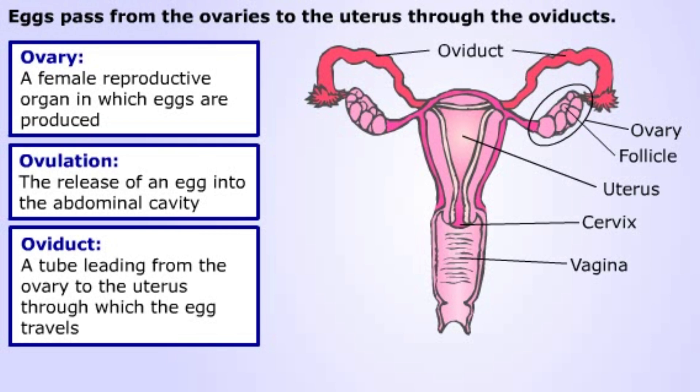In mammals, the egg implants into the wall of the uterus once it is fertilized, and development of the embryo takes place there.